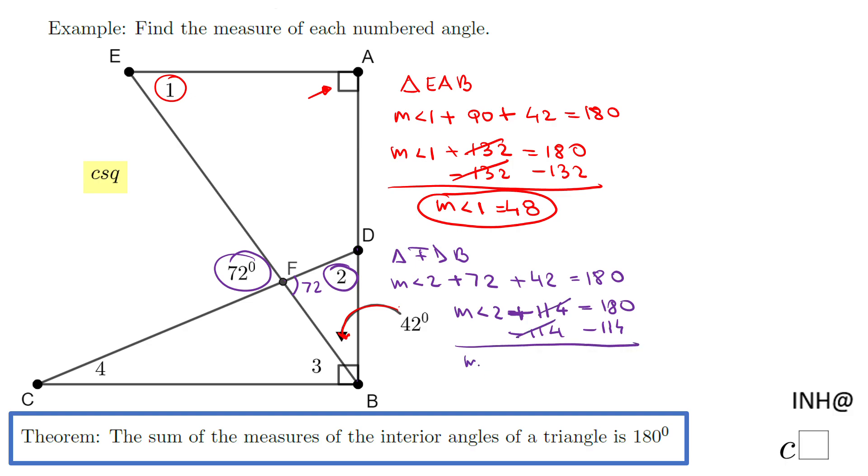We have the measure of angle 2 equals 66 degrees. Now we can go to angle 3. Angle 3 is down here. I think the easiest way is to look—this is a right angle, and one piece of this right angle is 42. So I'm going to write the measure of angle 3 plus that 42 degrees equals 90 degrees; they form that right angle.